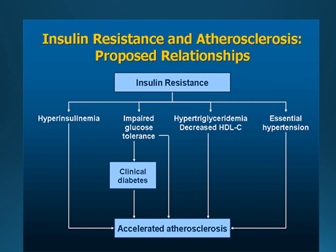The last mechanism is insulin resistance. When the body doesn't respond normally to insulin, the pancreas produces more insulin to keep blood glucose under control. This compensatory rise in insulin damages the lining of the arteries because insulin tends to make arteries more attractive to white blood cells that cause inflammation. The inflammation makes arteries less pliable, and this loss of elasticity increases blood pressure.